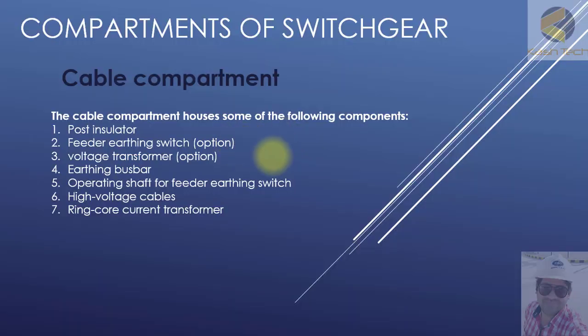Let's start our new topic: the cable compartment. The cable compartment houses the following components: post insulator, feeder earthing switch, and optionally a voltage transformer — it may or may not be present — earthing bus bar, operating shaft for the feeder earthing switch, high voltage cables, and ring core current transformer.